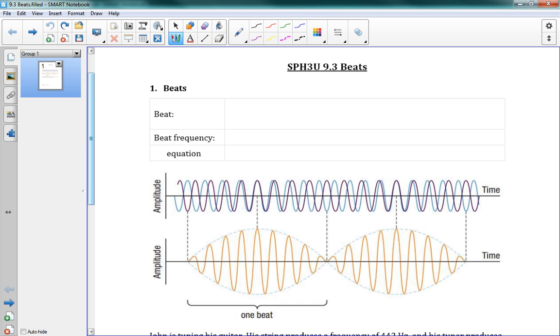We already talked a bit about this in class when we were looking at the guitar and how we were tuning it. So a beat is a periodic change in loudness caused by interference between two similar sound waves.